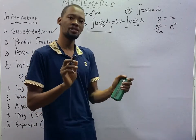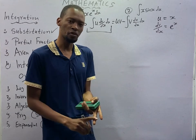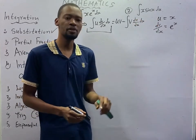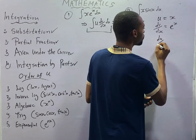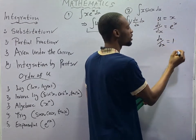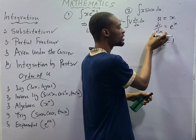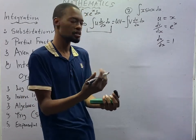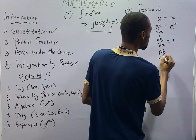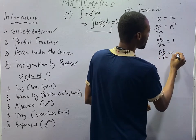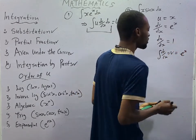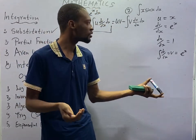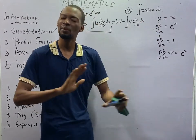In integration by parts, first identify your u, then identify the second function — that will be your dv/ds. Then differentiate your u: when you differentiate u = s, you get du/ds = 1. Then integrate dv/ds to get v. When you integrate eˢ, you get eˢ — it does not change. This is a standard integral. So v = eˢ.